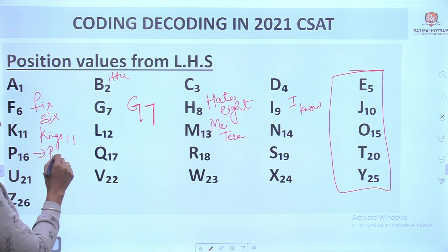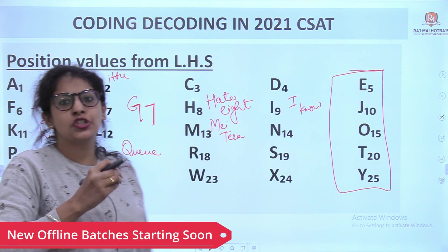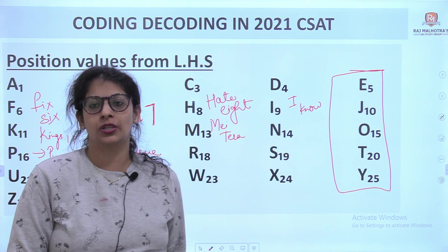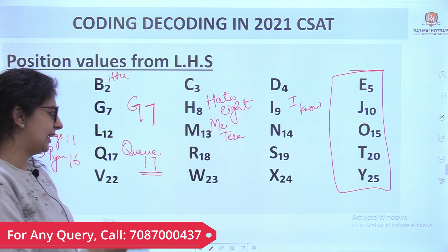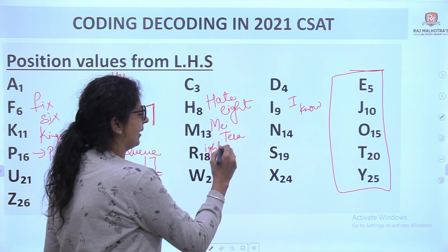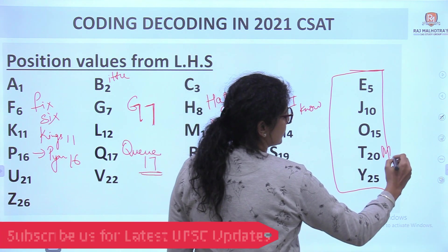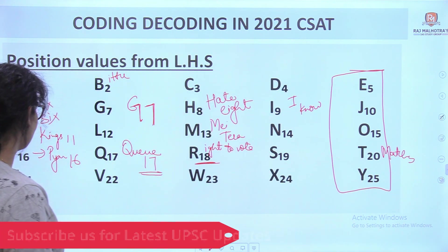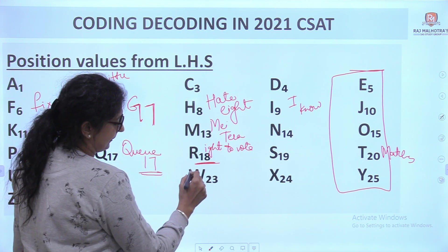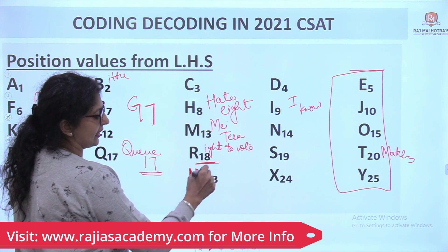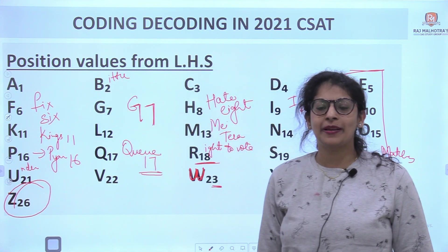P is 16 (pyaar 16). Q is 17 — Raj Malhotra Academy is in Chandigarh Sector 17, so Q=17. R is 18 — right to vote at age 18, so R=18. T=20 — T20 cricket matches. U=21 — under-21 games. V=22. W=23 — W looks like the number 3, so it's 23. Z is the last alphabet so its position value is 26, and A is first so it's 1.